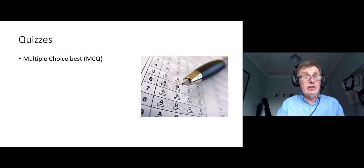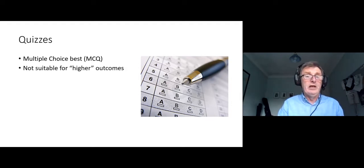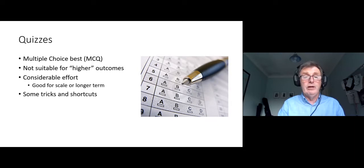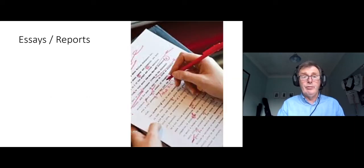The multiple choice question where you pick one right answer and the others are distractors is probably the easiest to work with. It's not suitable for higher learning outcomes and does require considerable effort. If you have a large classroom or you're teaching this subject for a number of years, that probably makes it worthwhile. There are some tricks and shortcuts to make it easier.